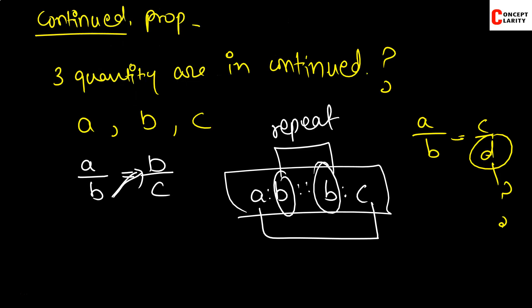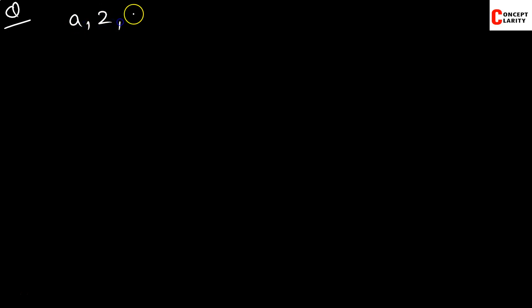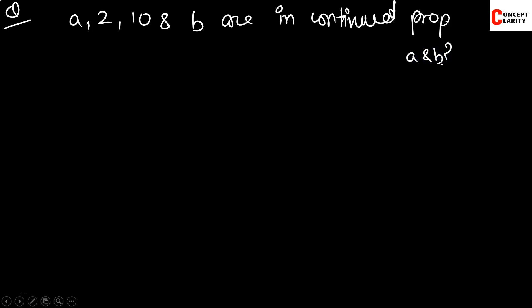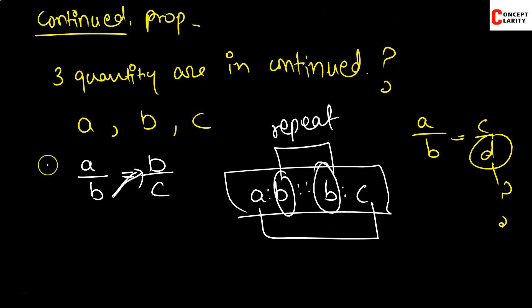I think you will understand better when we go to the questions — they are very easy. Let's start directly. We are given that A, 2, 10, and B are in continued proportion. We have to find the values of A and B. We have four quantities, so we write the continued proportion ratios accordingly.